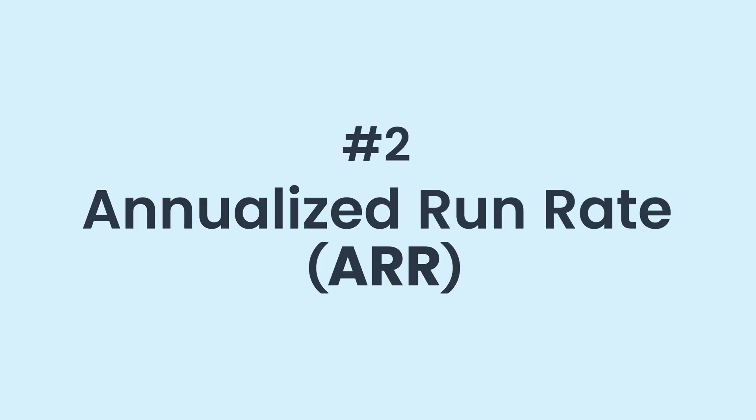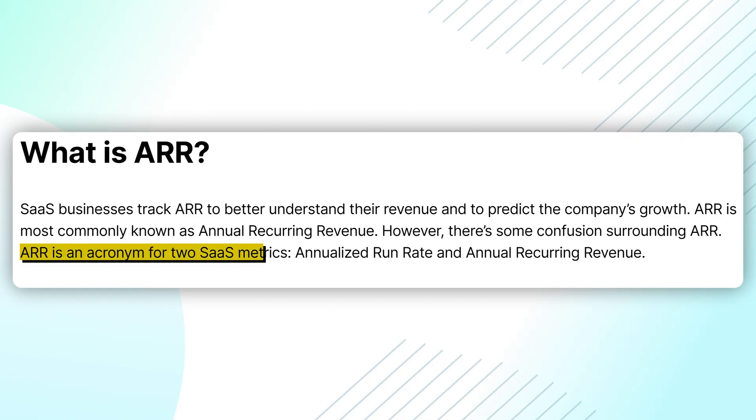The next metric we're going to talk about is ARR, which actually has two meanings. The first is annualized run rate, or annual run rate. The other is annual recurring revenue. These days SaaS is a global phenomenon and monthly subscriptions are much more common. Most SaaS businesses, especially high-volume product-led growth style SaaS businesses, will have more monthly subscribers than annual subscribers. Because of that, ARR has kind of shifted towards the annualized run rate definition.